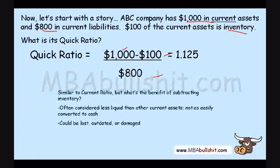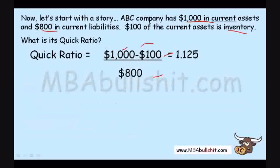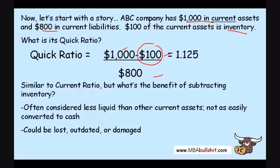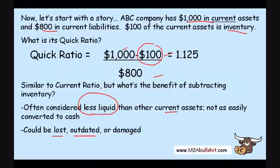As you can see, the quick ratio is similar to the current ratio, but we subtract inventory because inventory is considered less liquid — not as easily convertible to cash. Why? Because it could be lost, stolen, outdated — for example, mobile phones which become obsolete very fast — or damaged.